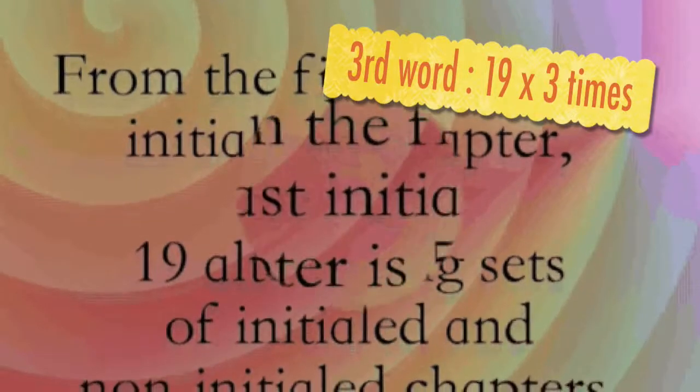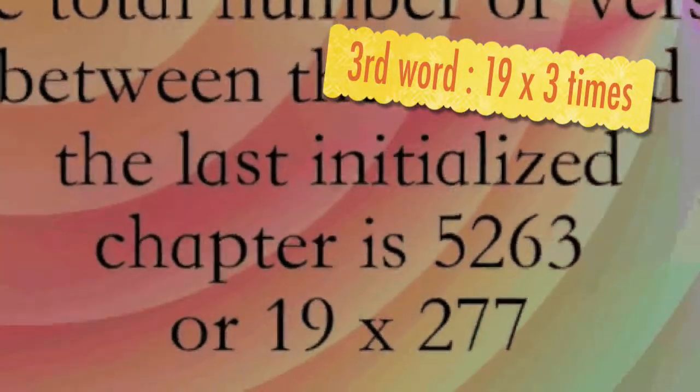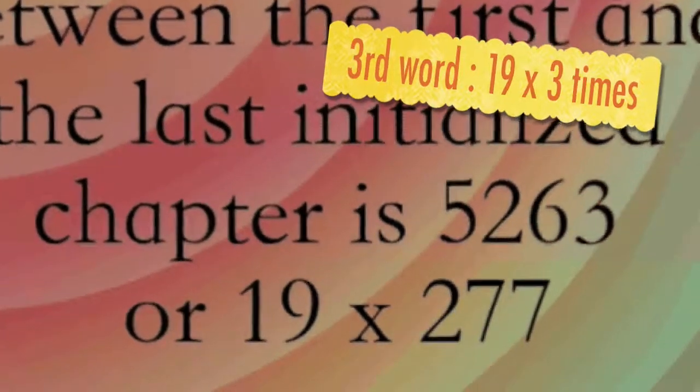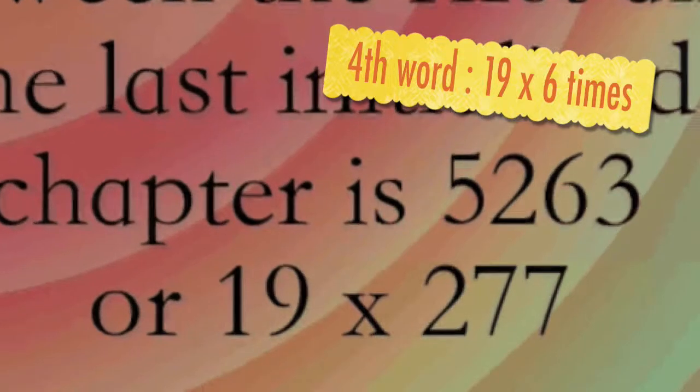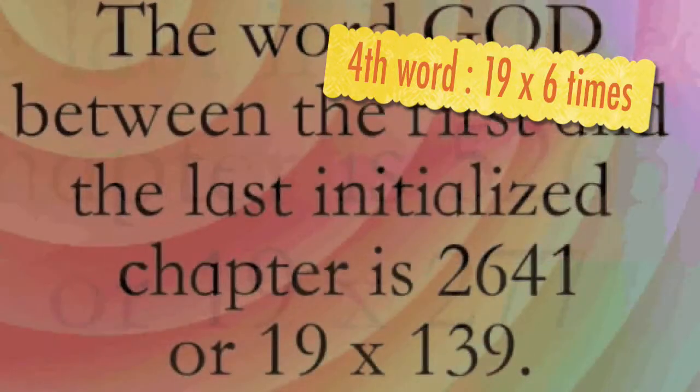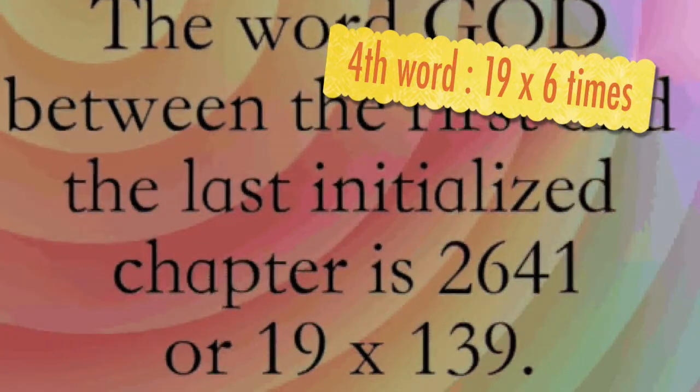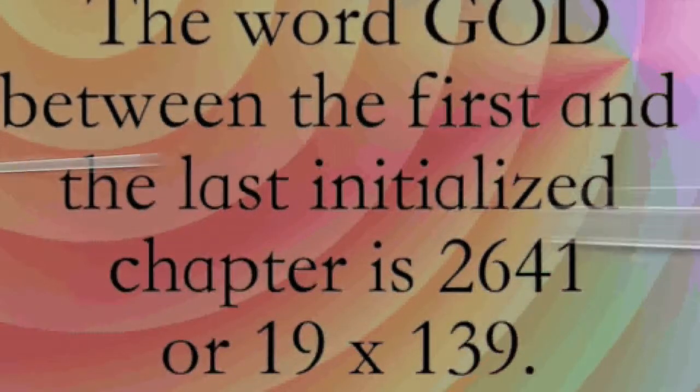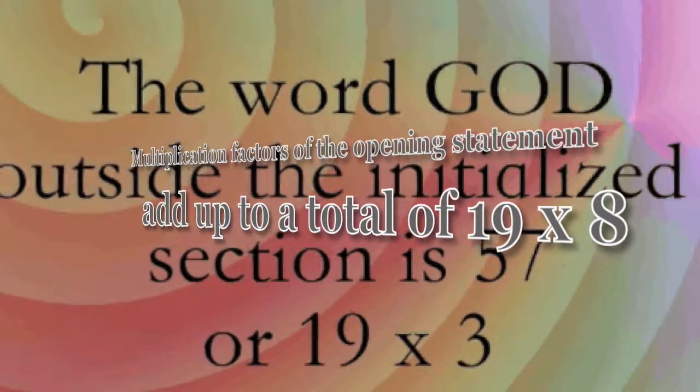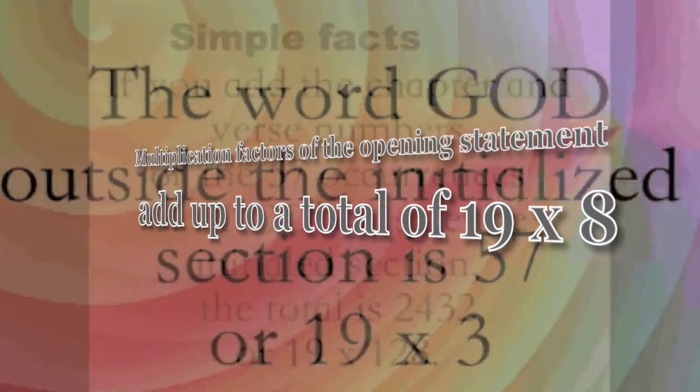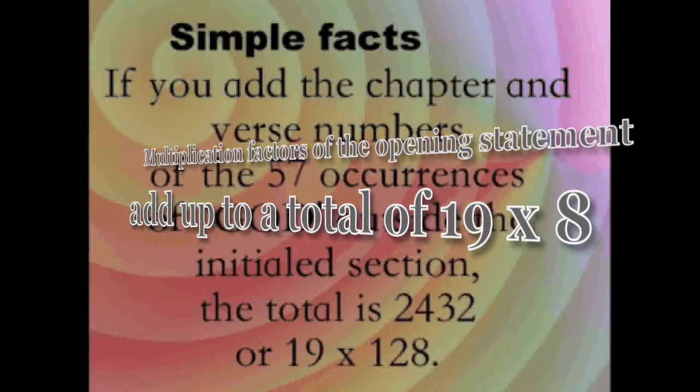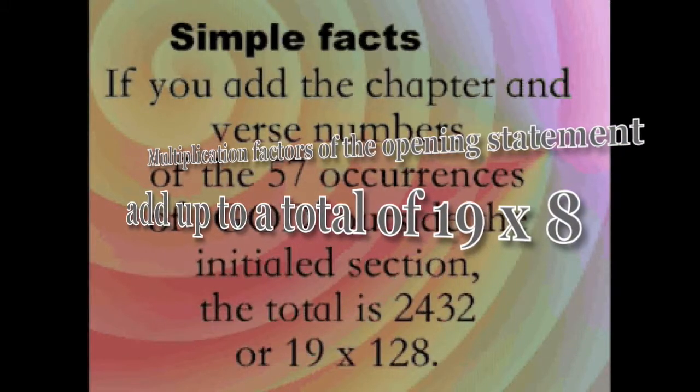16. Third word in the opening statement, Rahim, is mentioned in Quran 57 times, 19 times 3. 17. Fourth word in the opening statement, Rahim, is mentioned in Quran 114 times, 19 times 6. 18. Multiplication factors of the opening statement, 1 plus 142 plus 3 plus 6, add up to a total of 152, which is also a multiple of 19, 19 times 8.